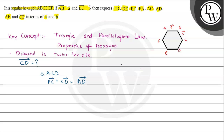Now, AC vector would be a vector plus b vector. So: (a vector + b vector) + CD vector = AD vector. AD is a diagonal and therefore it would be twice the side. In vector terms it will be twice b vector, because b is parallel to AD. So: a + b + CD = 2b, which gives us CD vector = b vector minus a vector.